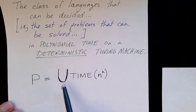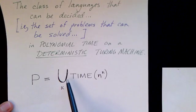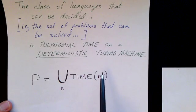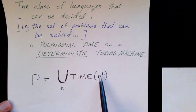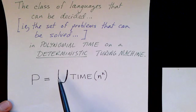So formally we can specify that this way. Here's a union over all possible exponents. So this includes the problems that are in class n squared and problems that are n cubed and so on for all k. These are the problems that can be solved in polynomial time on a deterministic Turing machine.